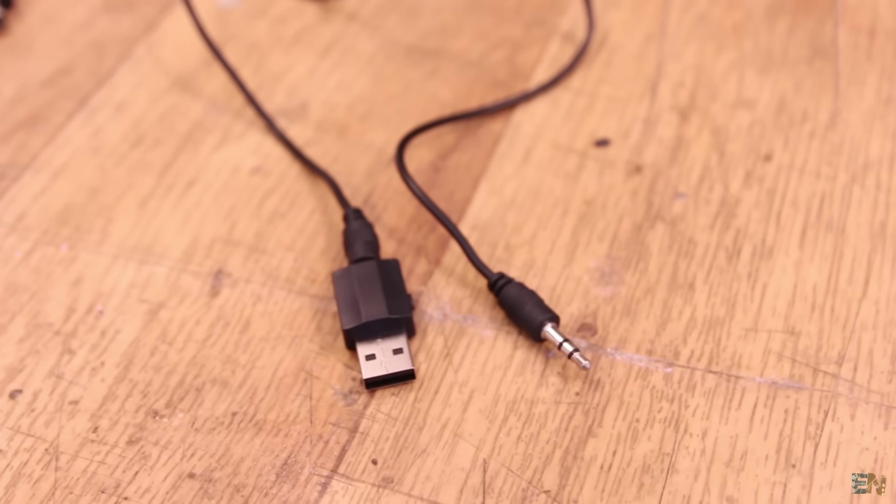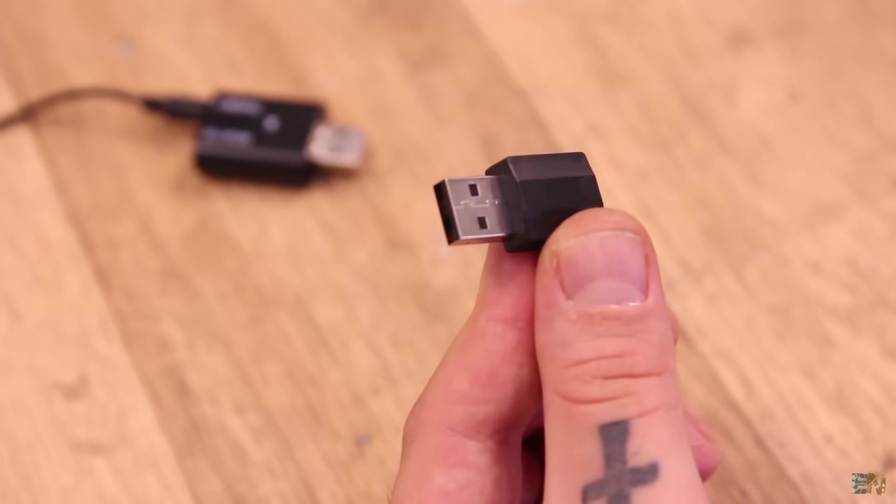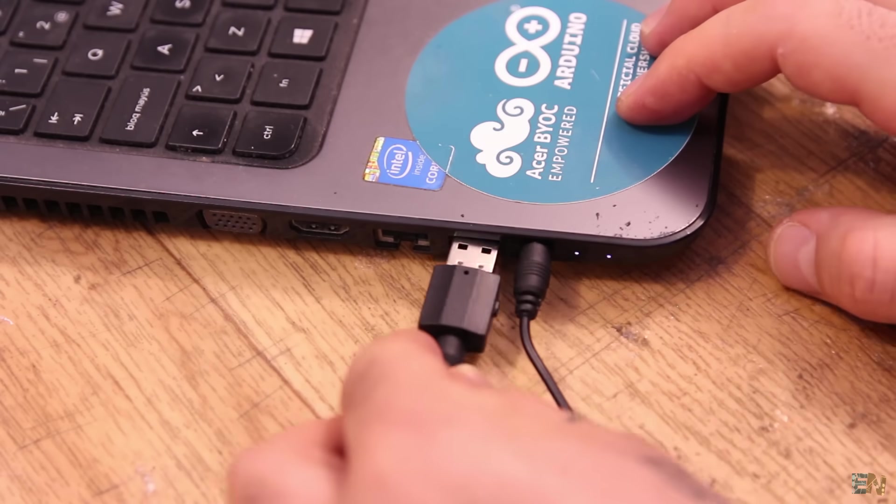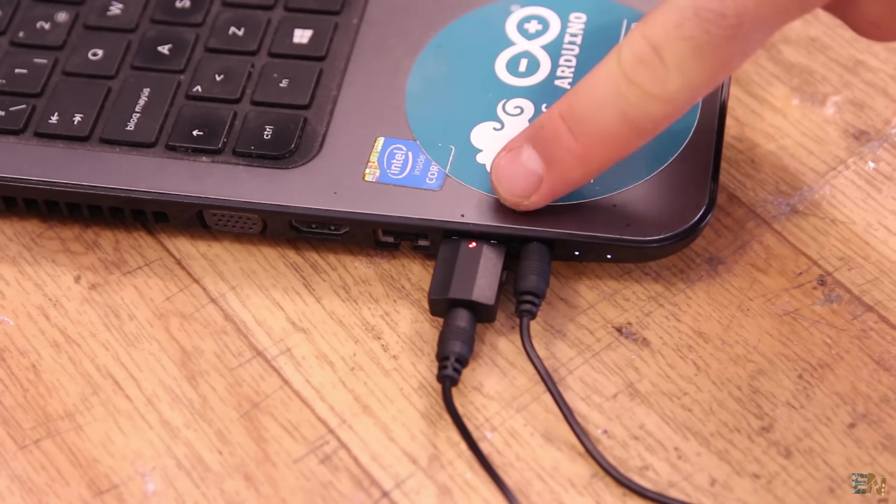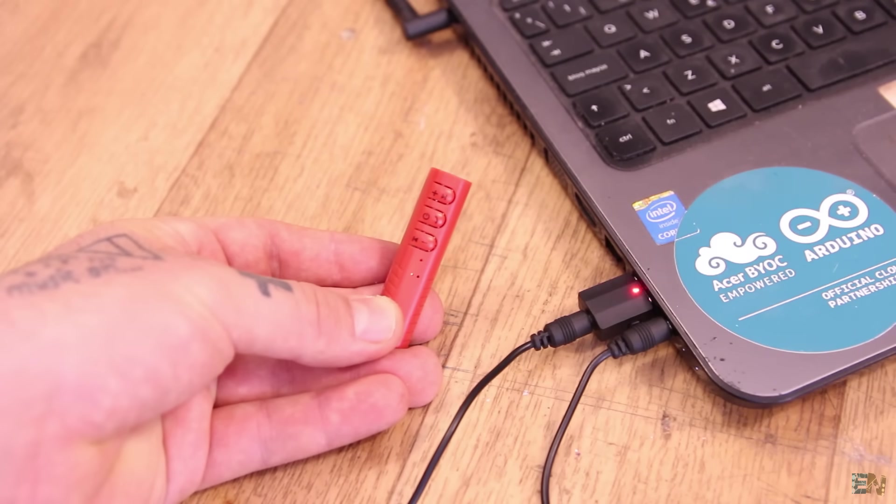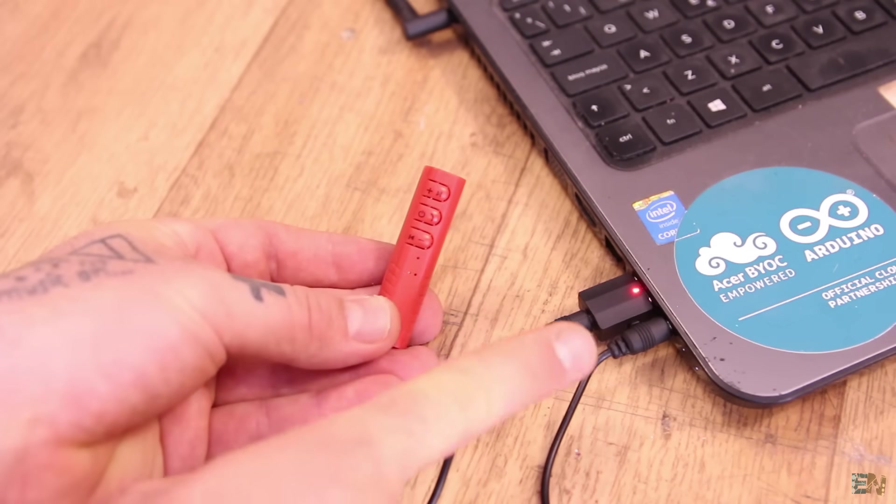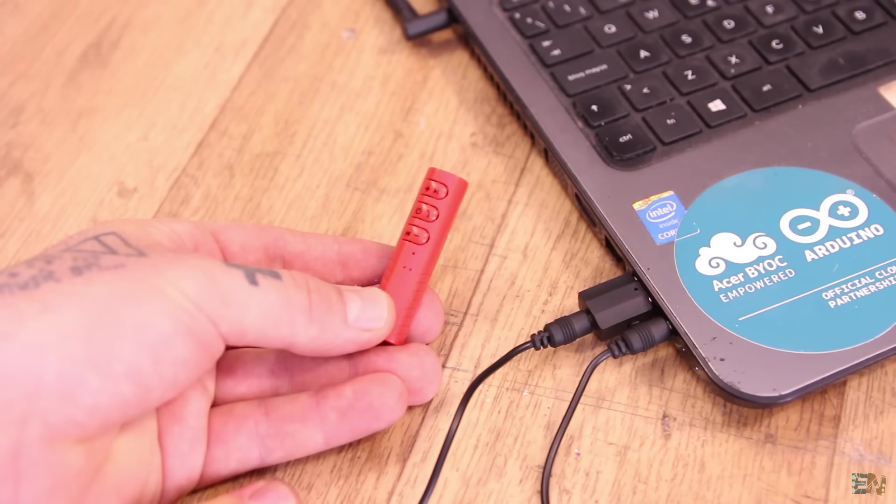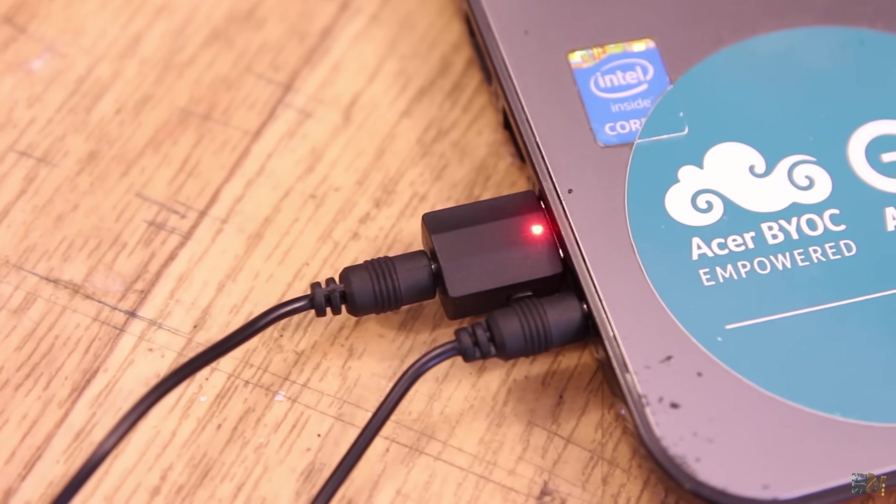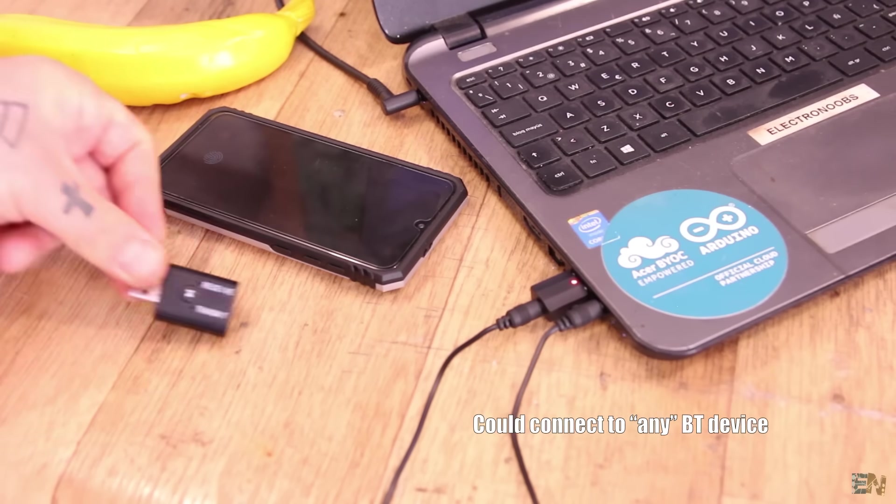This one also worked very well. You power this up with 5V from the USB connector and then you connect the audio jack to any audio input. It will automatically enter into transmit mode and the LED will turn red. It will connect automatically to any Bluetooth device that it finds around that has no password and has the same frequency.